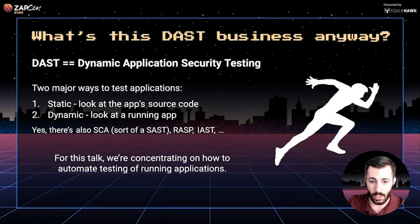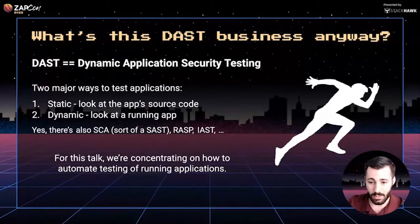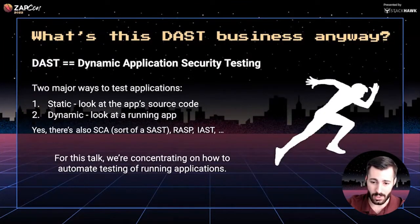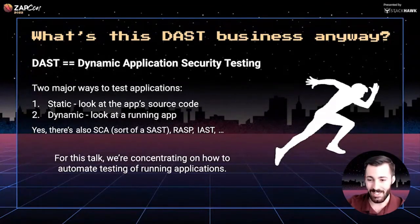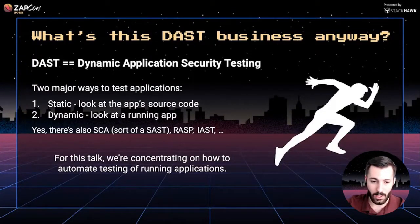Dynamic tools look at how data is moving, put safeguards around that movement, and also test for validation before it even reaches the server. There are also other flavors of application security testing such as SCA, RASP, and IAST — pretty much any other type of AST with another letter in front of it. But for this talk, we're really going to be targeting dynamic testing.